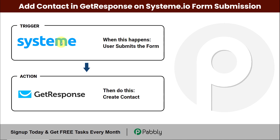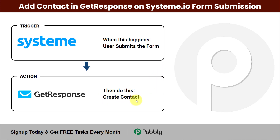Hello and welcome to Pabbly. In this video we are going to understand how to add a contact in GetResponse on Systeme.io form submission. So let's say that you are receiving new leads via form submission and you are using Systeme.io, which is an all-in-one marketing tool. Every time a user submits the form, with those details you wish to create a contact in GetResponse, which is a global email marketing service.